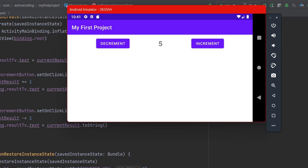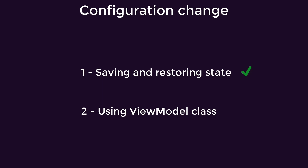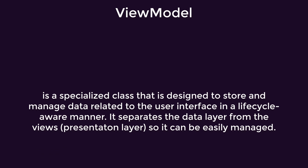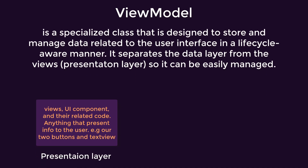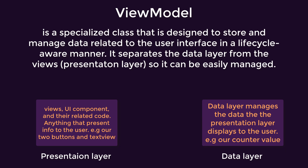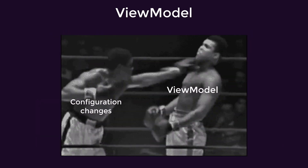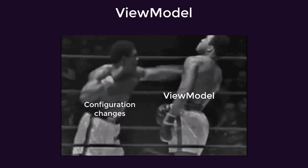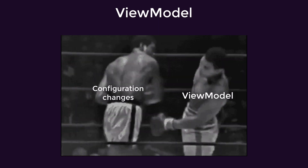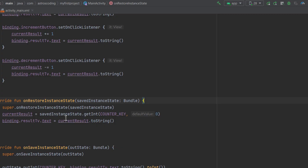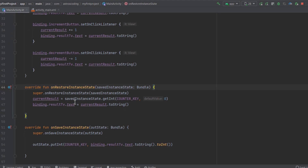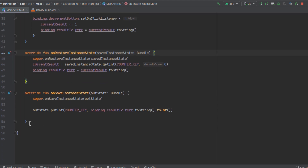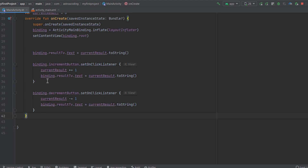The second option is to use a ViewModel class — a class in Android designed to store and manage UI-related data in a lifecycle-aware manner. It is used to separate the presentation layer from the data layer, and to ensure that data survives configuration changes such as screen rotation. Now let's implement a ViewModel for our main activity, removing the onSaveInstanceState and onRestoreInstanceState callbacks.